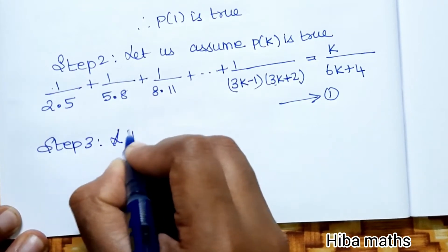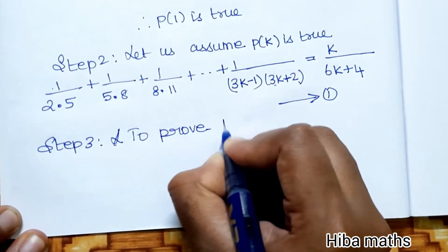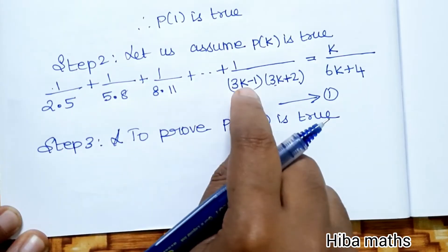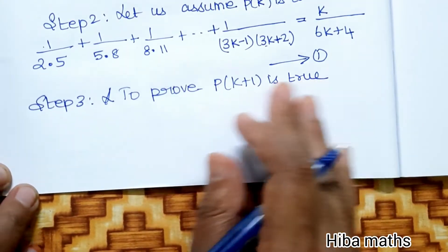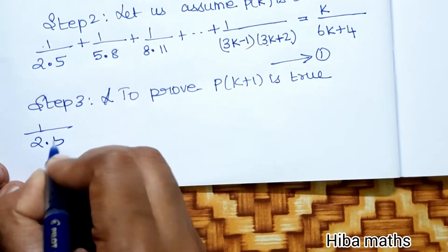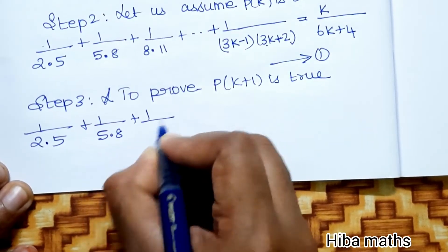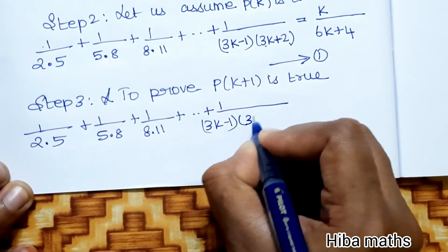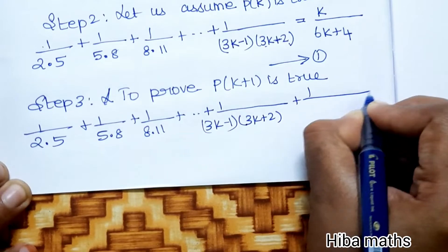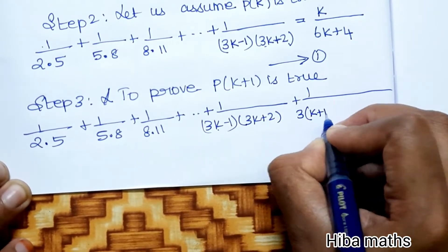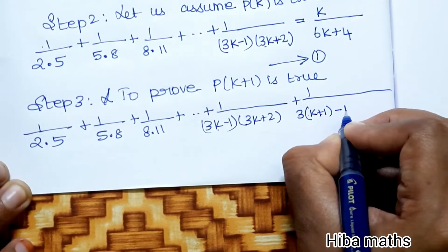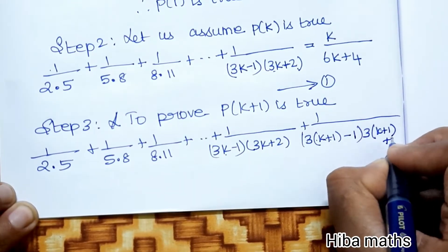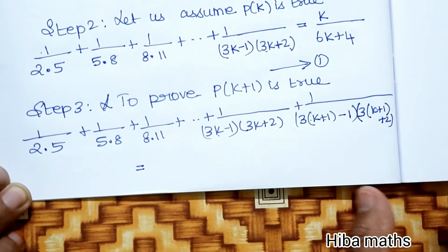Step 3: We need to prove P(K+1) is true. The expression becomes the sum up to 1/((3K−1)(3K+2)) plus the next term 1/((3(K+1)−1)(3(K+1)+2)). The value 3(K+1)−1 = 3K+2, and 3(K+1)+2 = 3K+5.